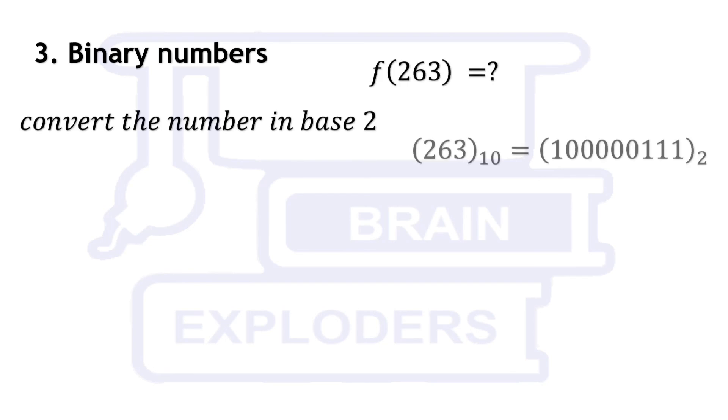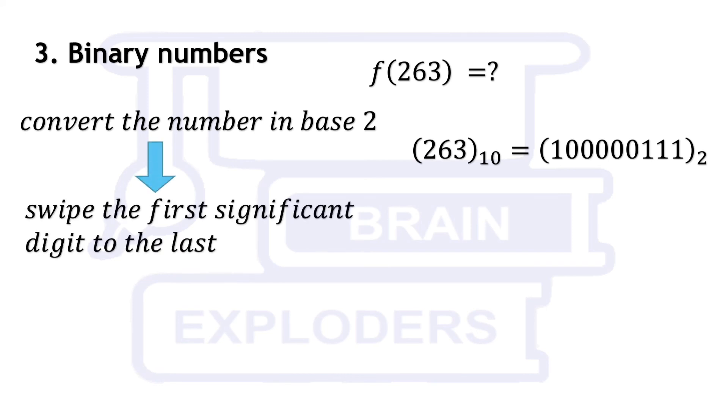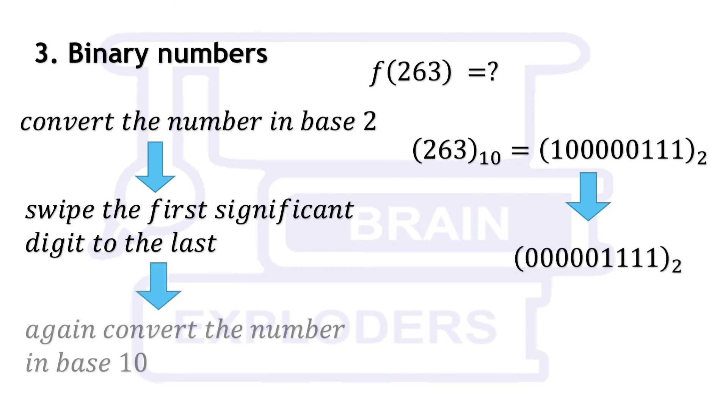This procedure looks quite simple when performed with binary numbers. First of all, convert the number into binary number. Then, take the leftmost one and put it to the rightmost place. We get the solution in binary. Now, convert it again into decimal.